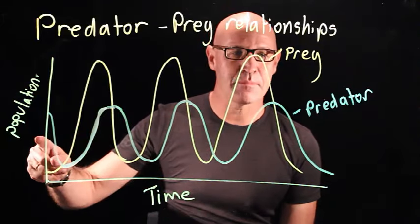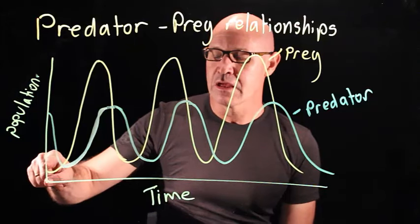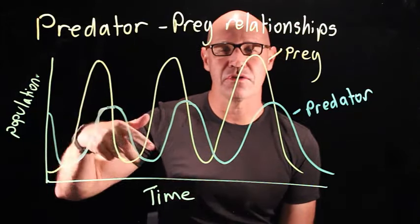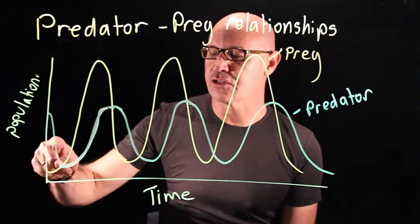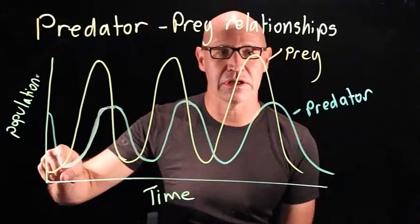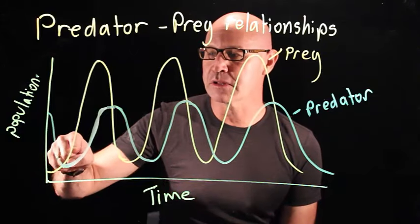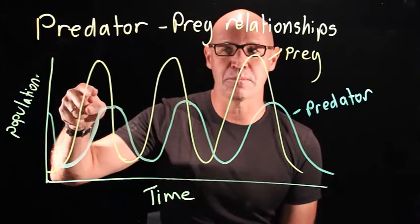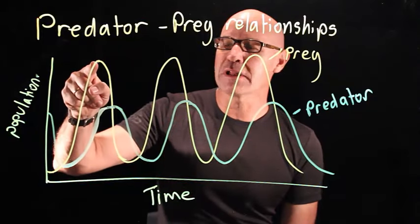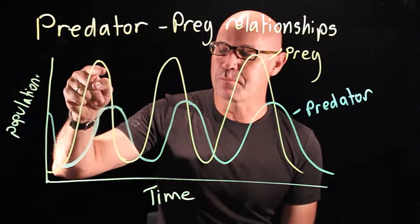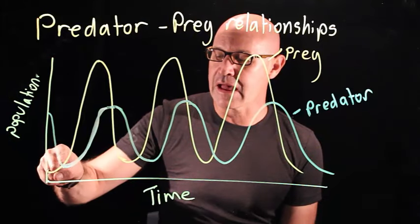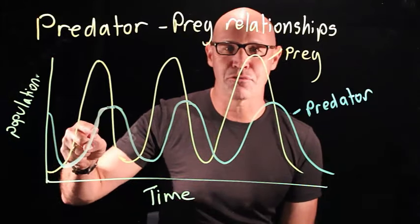Let's start by looking at the prey. The prey population is going to increase when the conditions are right — there's plenty of food and the predator level is low — so their population increases because of reproduction. Then the population actually peaks.